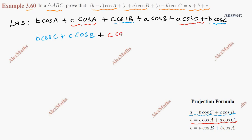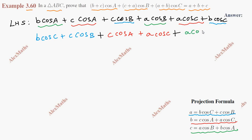Third group: A cos B plus B cos A. Applying the projection formula to each group, we get A plus B plus C, which equals RHS.